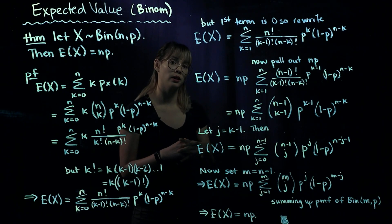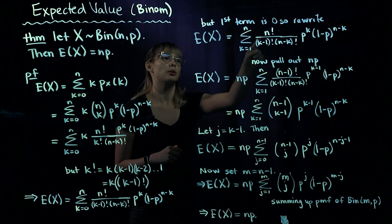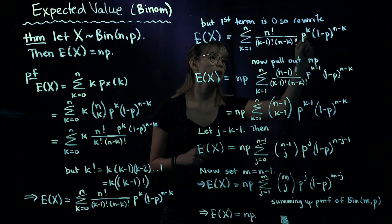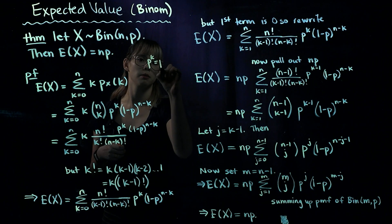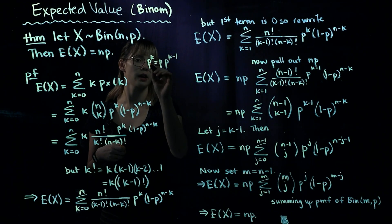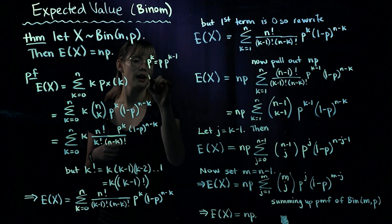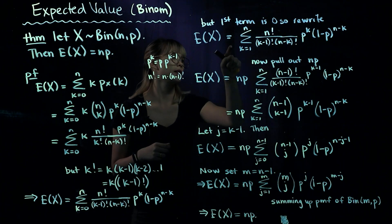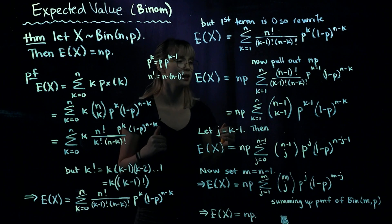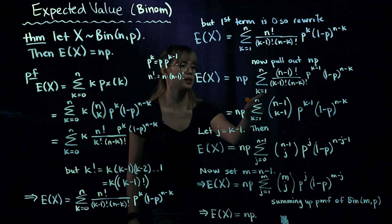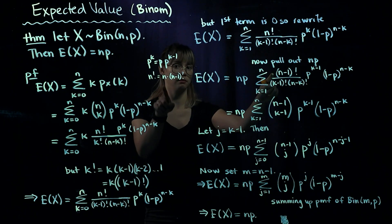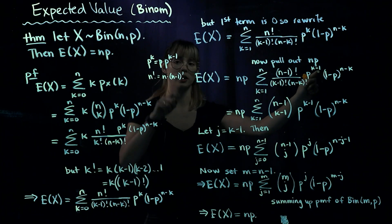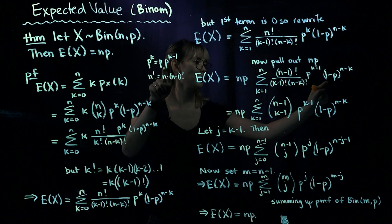Now we're going to pull out an n and a p. We rewrite n factorial as n times n minus 1 factorial, and p to the k as p times p to the k minus 1. Since n and p don't depend on k, we pull them outside the sum. So the expected value of x equals n times p times the sum from k equals 1 to n of: n minus 1 factorial divided by k minus 1 factorial and n minus k factorial, times p to the k minus 1, times 1 minus p to the n minus k.